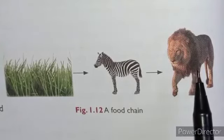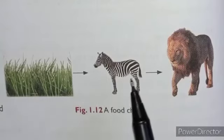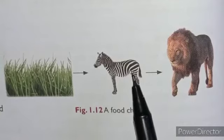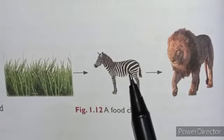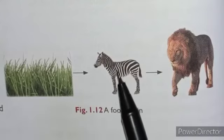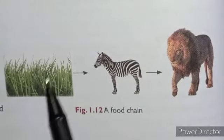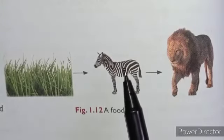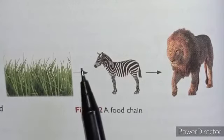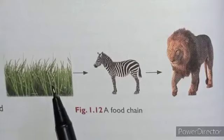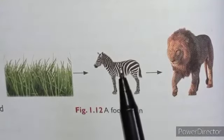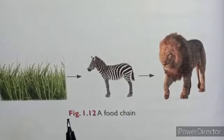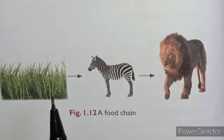This chain is called a food chain. A food chain shows this interdependence in a particular environment. The zebra depends on grass or plants, and the lion depends on herbivores. All food chains start with plants only.